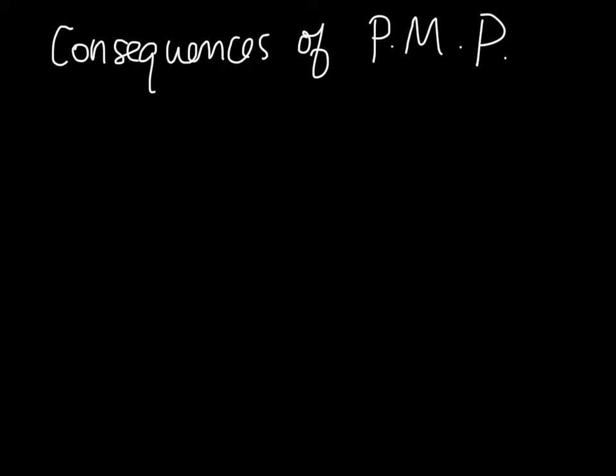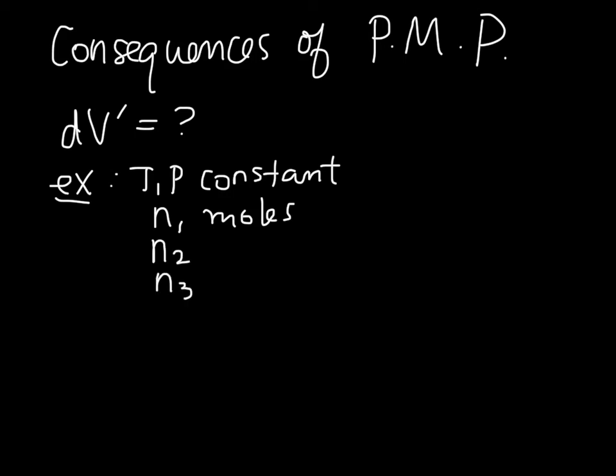So, let's say that we want to know something about how the total volume of the system changes. That's really just the sum of the changes contributed by each component. So, let's do a little thought experiment here. Let's say that we have temperature and pressure constant. And we have N1 moles of component 1 and N2 moles and N3 moles of components 2 and 3. And we want to know what is the volume of the system.